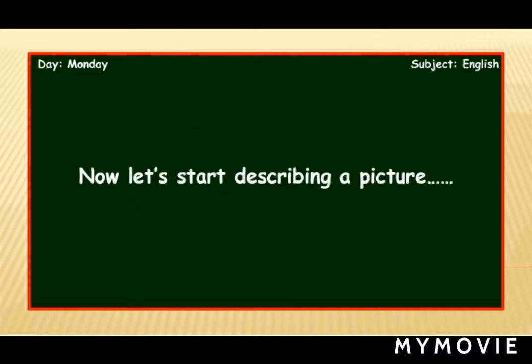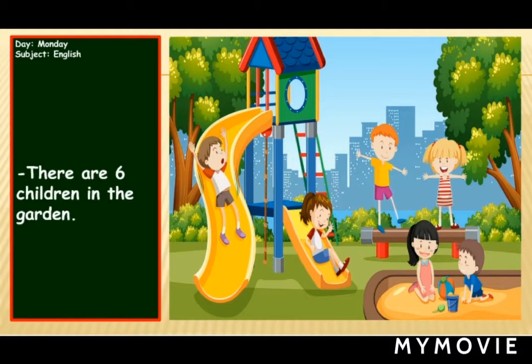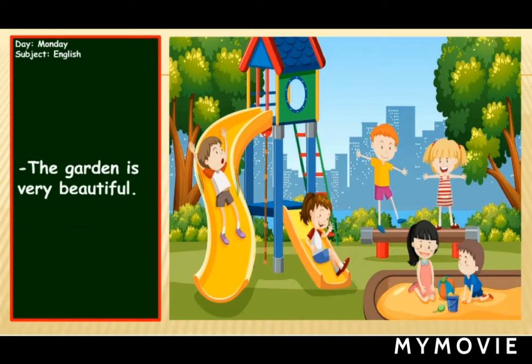Now let's start describing a picture. Look at the picture very carefully. Can you tell which scene is there in this picture? Yes, it is a morning scene as the darkness is not there. Now, how many characters are there in this picture? Yes, there are six children in this picture. Kids, can you tell me what is happening in the picture?